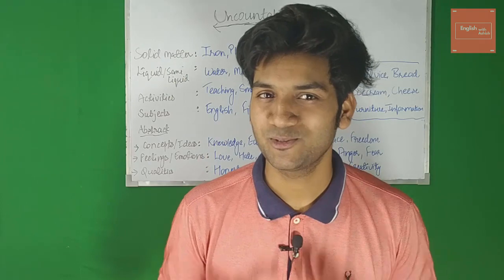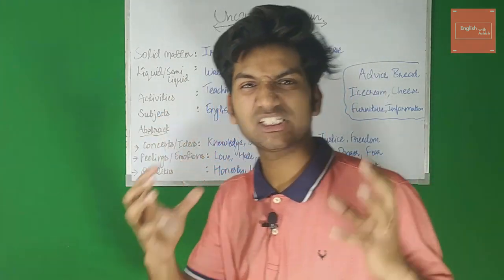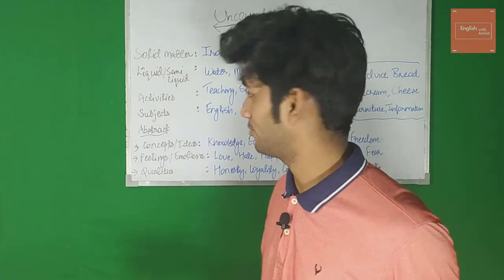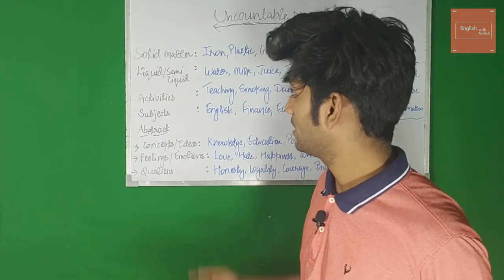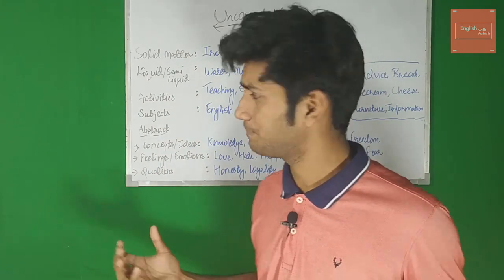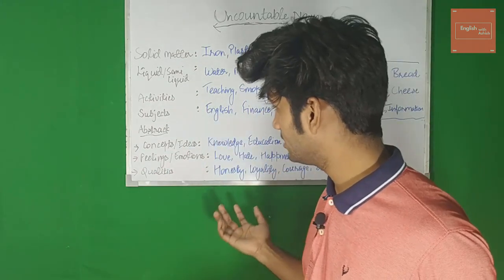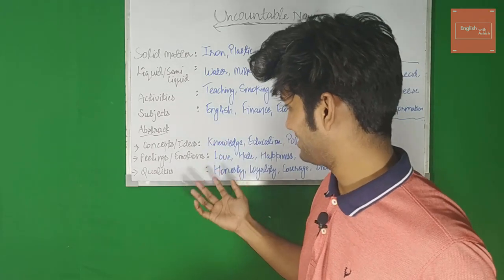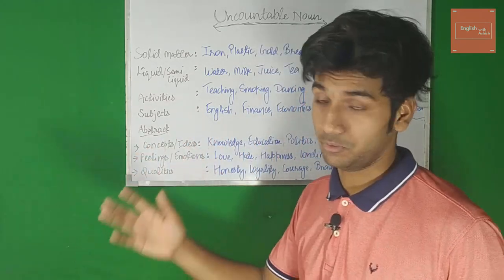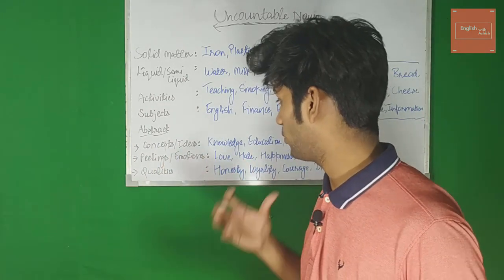The major sources all uncountable nouns come from are: solid matters, liquid or semi-liquid, activities, subjects, and abstract — which includes concepts or ideas, feelings or emotions, and qualities also called attributes. Before getting into those, let's talk about the common uncountable nouns that we make mistakes with.